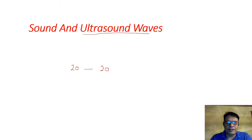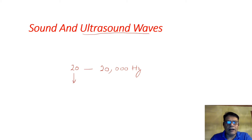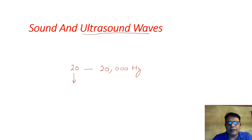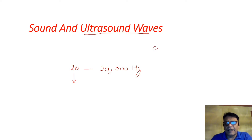The basic human hearing range is between 20 to 20,000 Hertz. Any frequency below 20 Hertz is called infrasound or infrasonic waves, and any wave that has a frequency above 20,000 Hertz is called ultrasound waves.